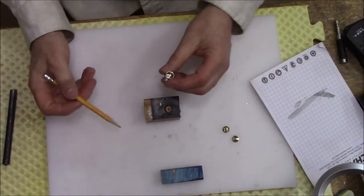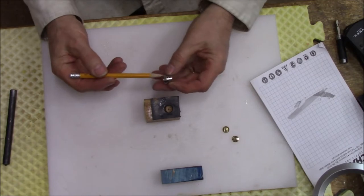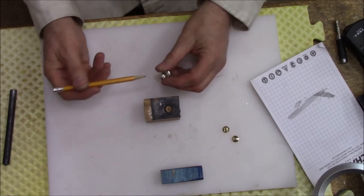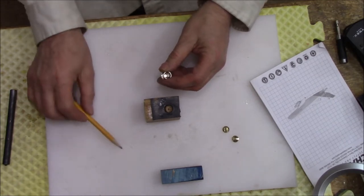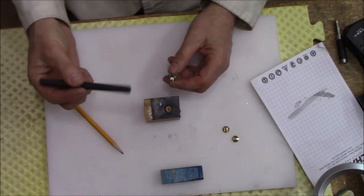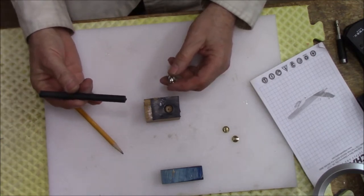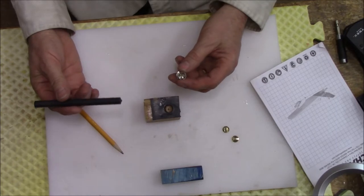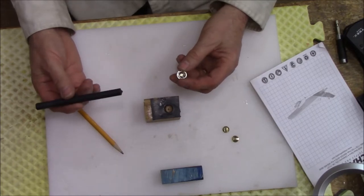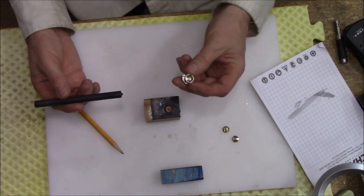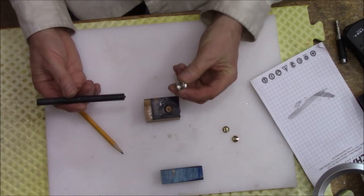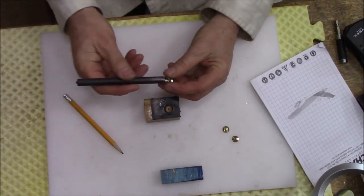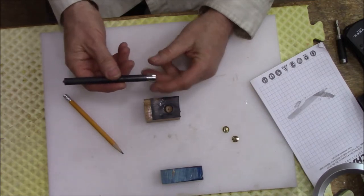Most of these finials, they're just sitting in there and they're epoxied in or whatever. So we have to punch them out. This punch size, and by the way, this is a set of Harbor Freight punches. I think they're $12 at Harbor Freight. I'll leave you a link in the description. But this one is 13/32nds and it fits on there perfect.